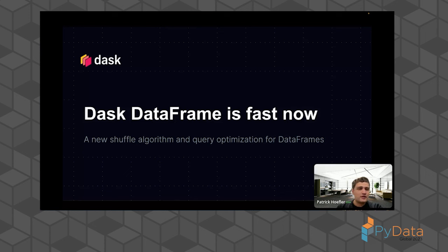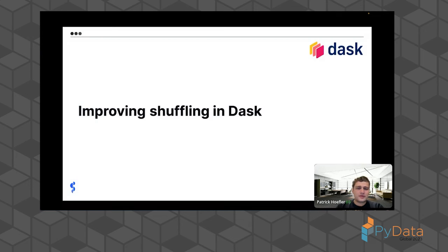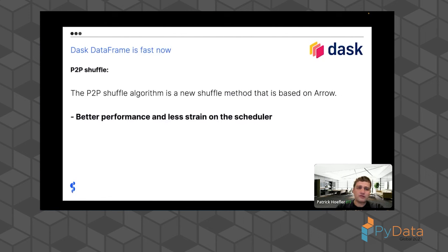The things that contributed most to making dask fast — apart from Arrow strings — are a new shuffle algorithm and query optimization for dask dataframes. Dask historically struggled badly with shuffling: it strained the scheduler, didn't utilize the cluster well, and copied a lot of data from one machine to another, which is very expensive in a distributed setting. This was improved earlier this year and we're still actively working on it, but the performance and stability increase is already huge.